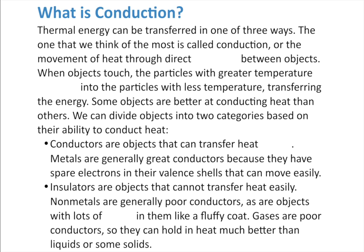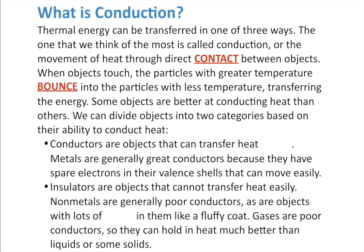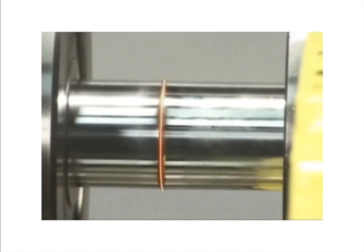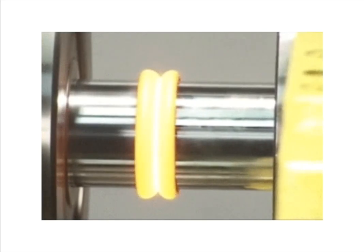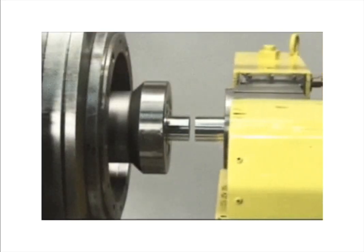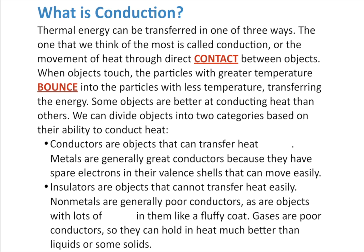Conduction is the movement of heat through direct contact between objects. When objects touch, particles with greater temperature bounce into particles with lower temperature, and thermal energy moves from higher to lower. In a welding example, the friction creates intense heat, and particles bounce outward from the high-temperature zone into the surrounding metal — transferring heat because the materials are actually touching.